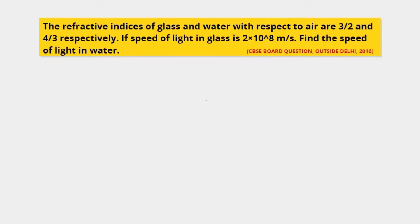The refractive indices of glass and water with respect to air are 3/2 and 4/3 respectively. If the speed of light in glass is 2×10⁸ m/s, find the speed of light in water.